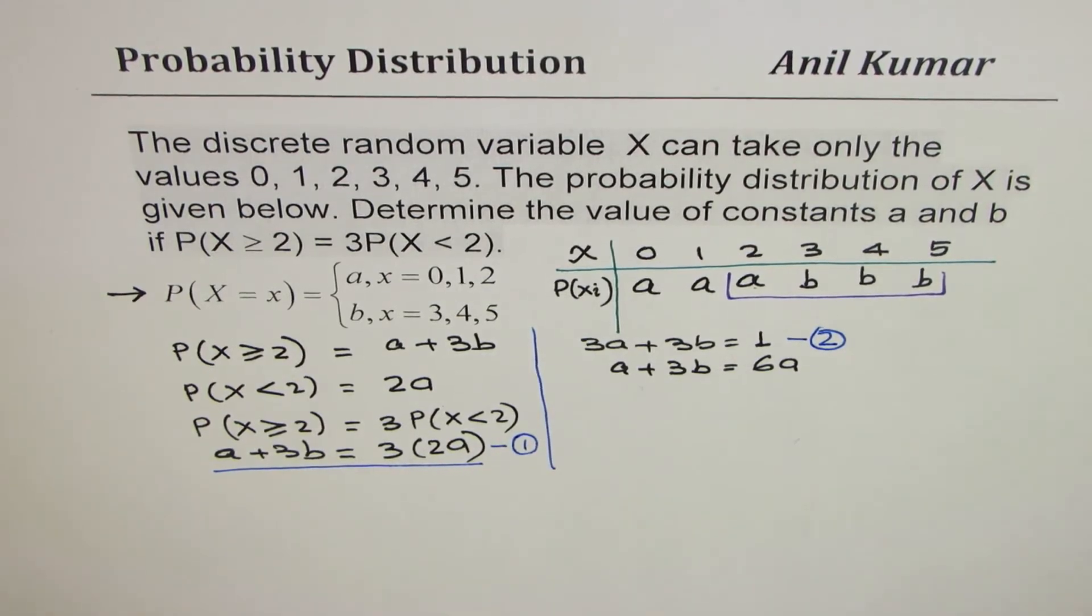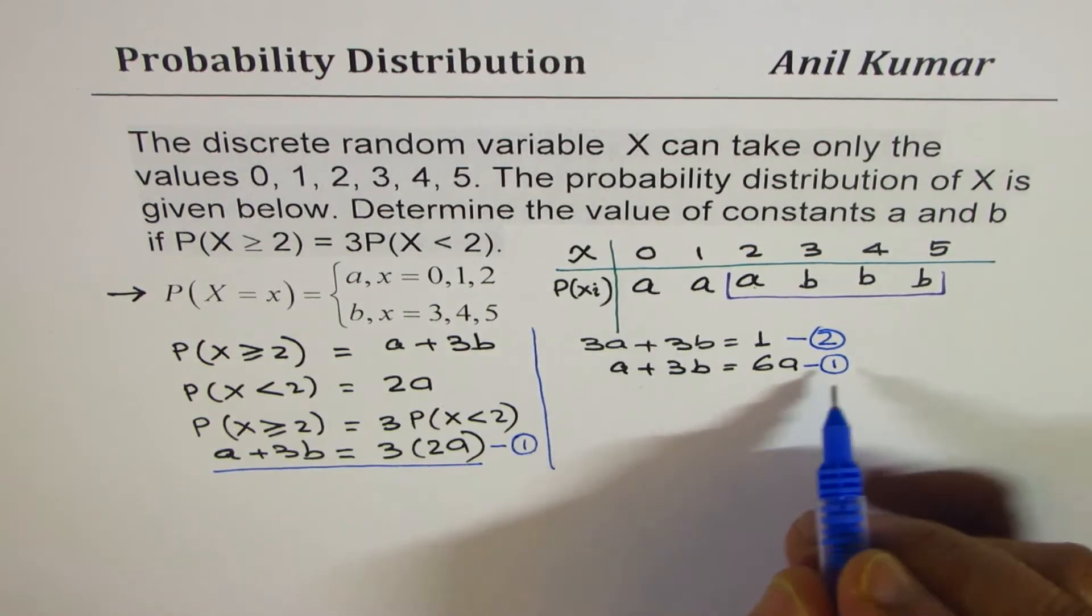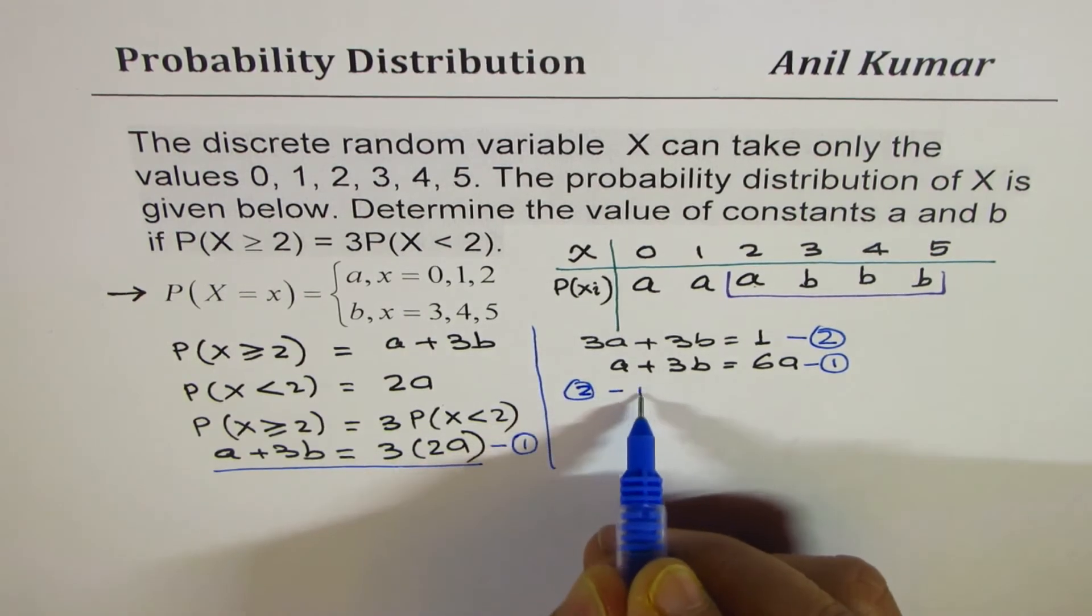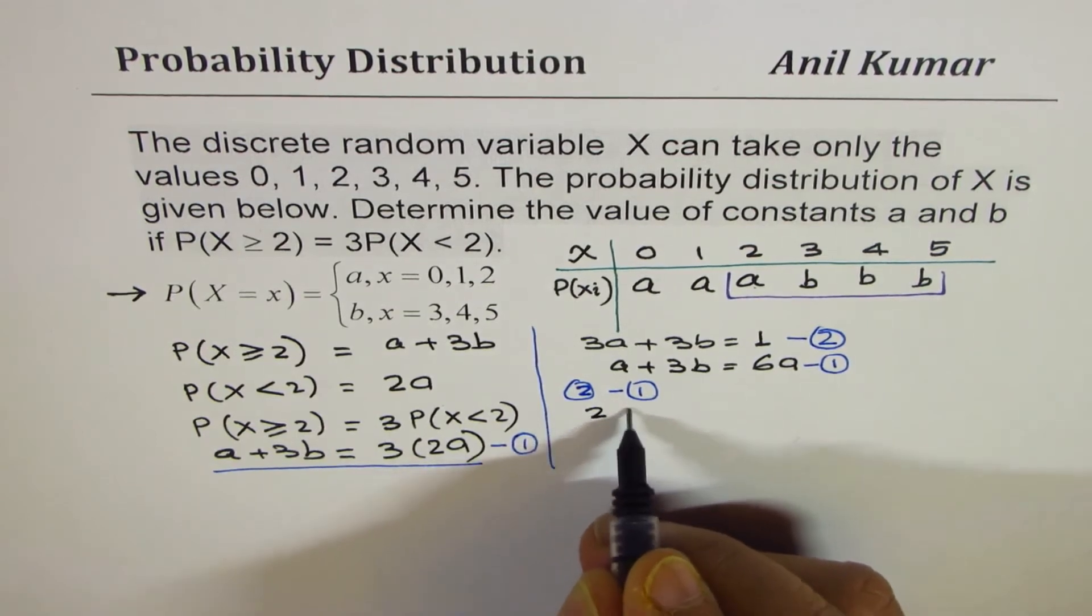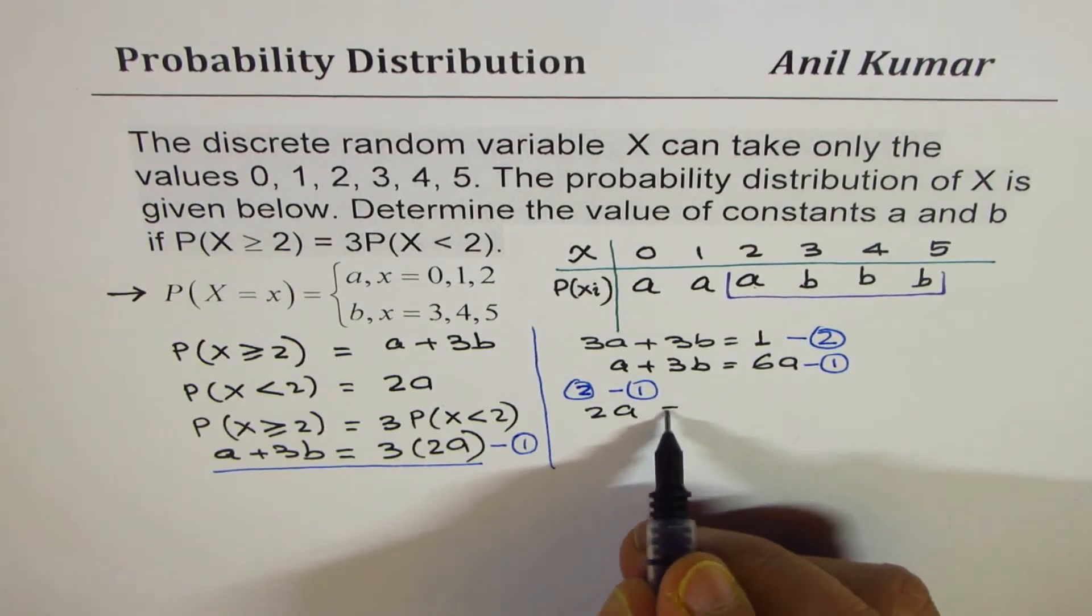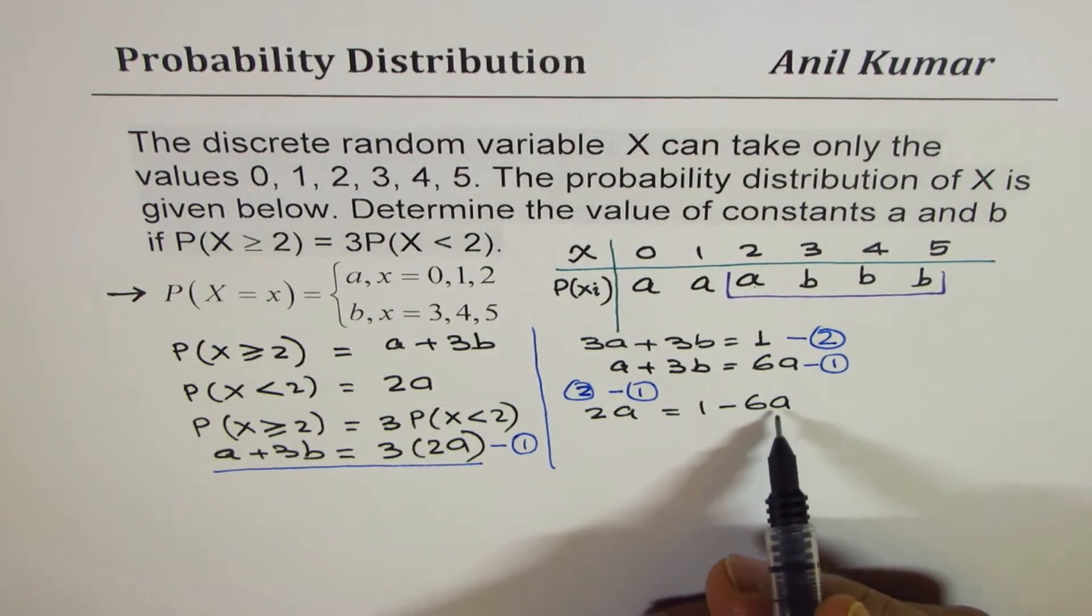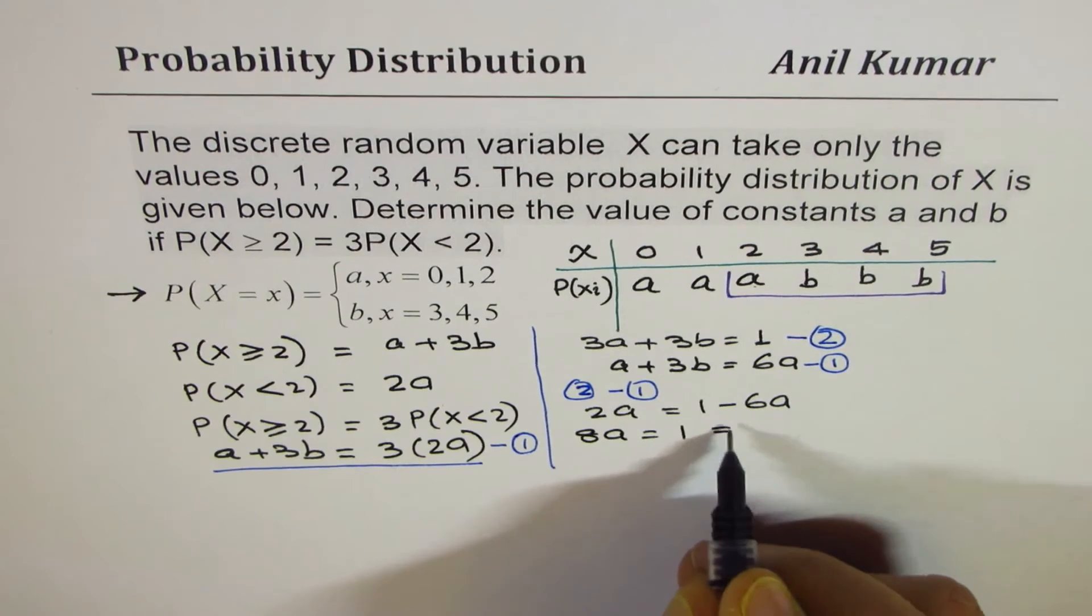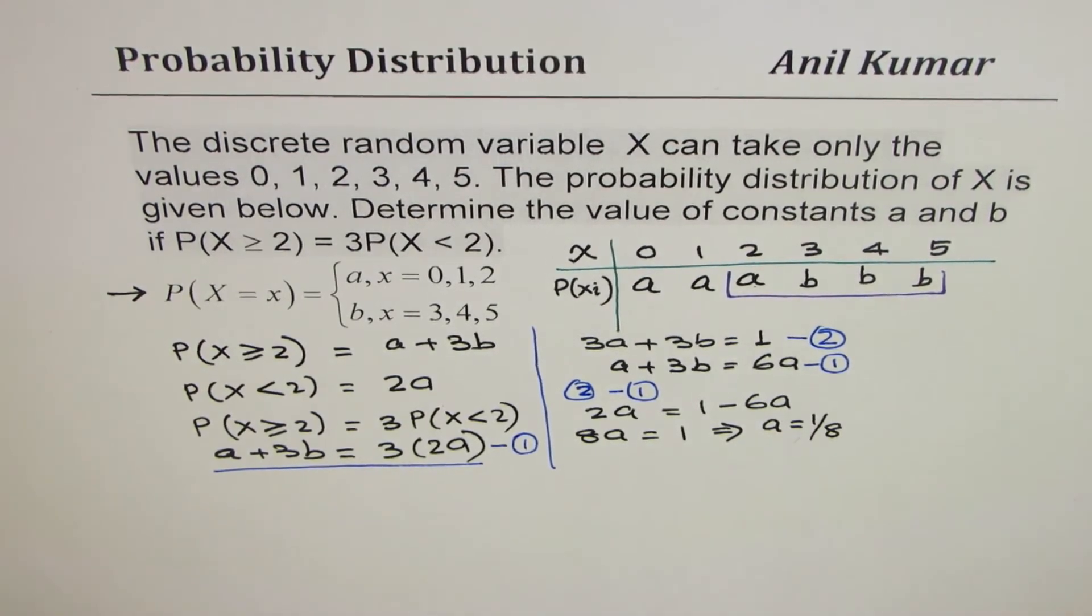So that becomes our equation number 1 and 2. You could eliminate 3b by doing equation 2 minus 1. So if I do equation 2 minus 1, what do I get? I get 2a here. 3b, 3b cancel. 1 minus 6a. Now let me bring it to the same side. So 8a equals to 1, which gives us a equals to 1 over 8.